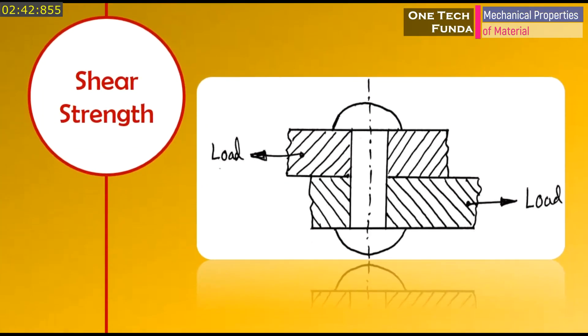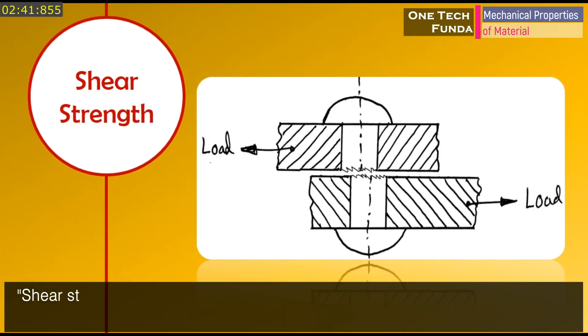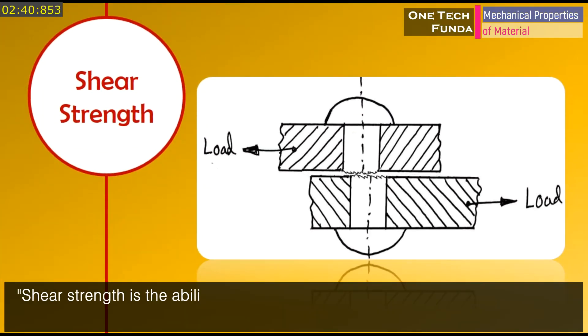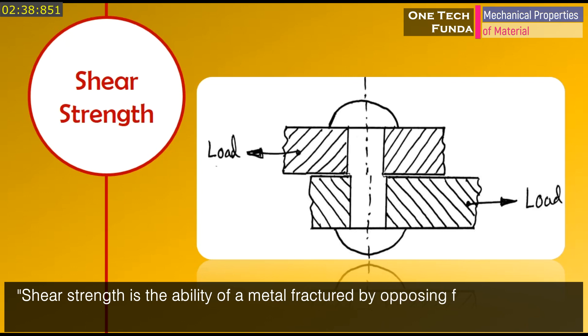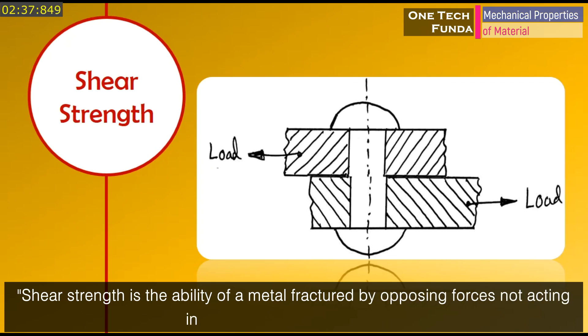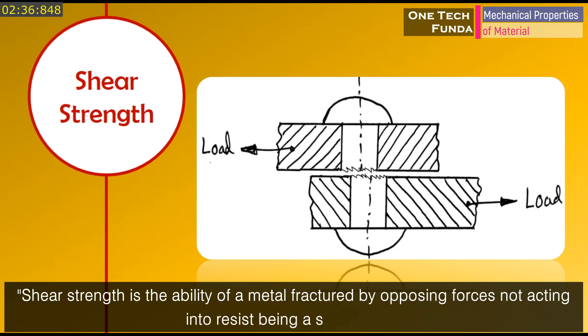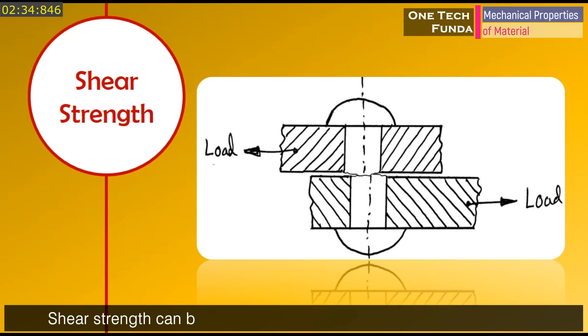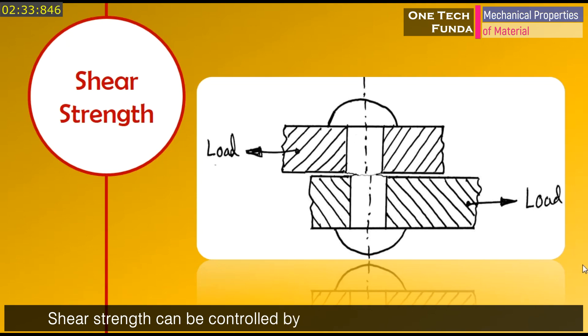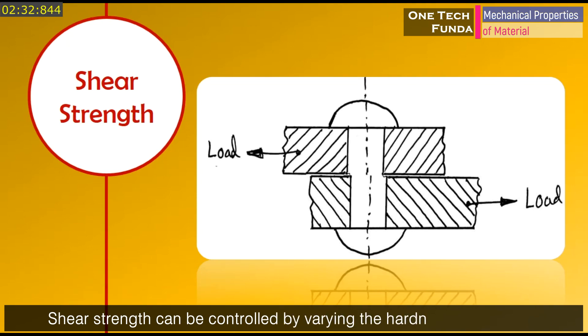Shear strength is the ability of a material to resist being fractured by opposing forces not acting in a straight line. Shear strength can be controlled by varying the hardness of the metal.